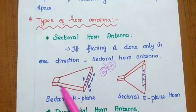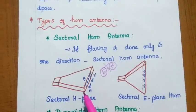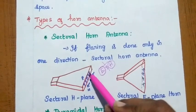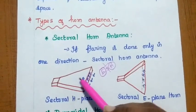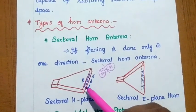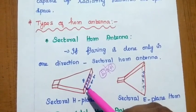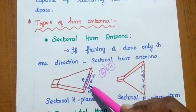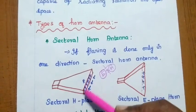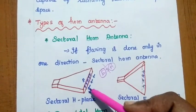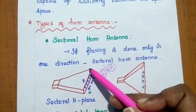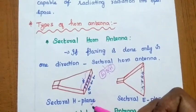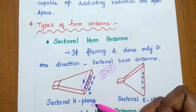This is the waveguide, and this is the horn antenna. Electric fields are always radiated in the radial direction, but the horn is just perpendicular to this electric field. The electric field is in this direction and the magnetic field is perpendicular to it. Here the flaring is parallel to the magnetic field — that is why it is called the sectoral H-plane horn antenna.